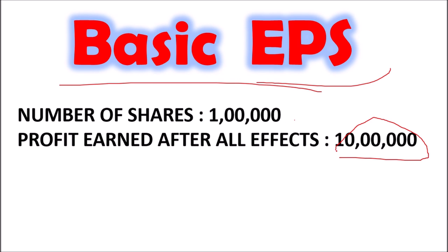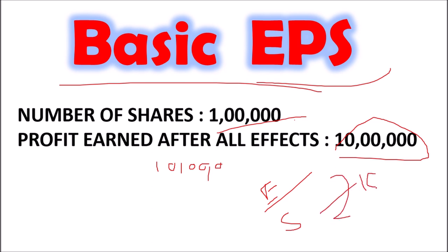The profit here is the net profit available to public shareholders. For example, if the company has preference shareholders and pays 5 lakhs as dividend, the remaining profit is 10 lakh rupees. So basic EPS = 10 lakh rupees divided by 1 lakh shares = Rupees 10 per share.